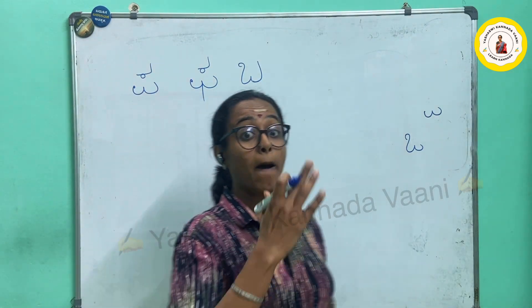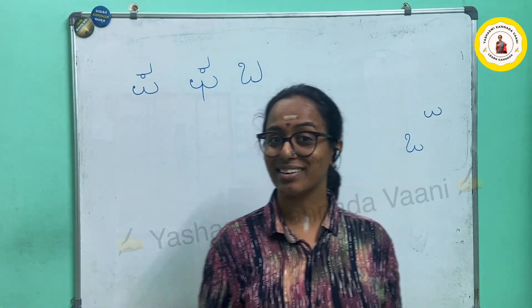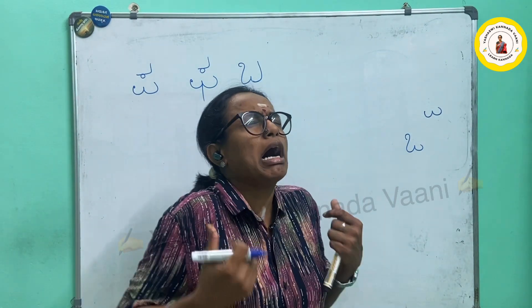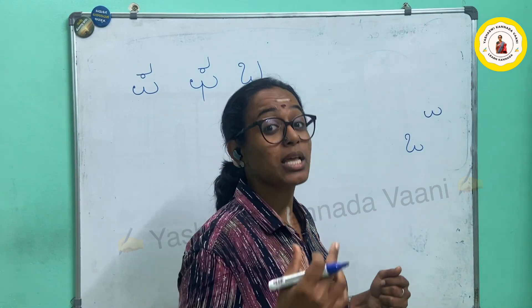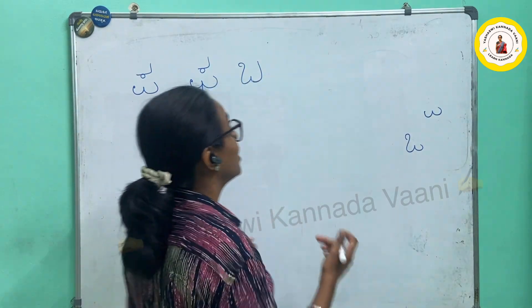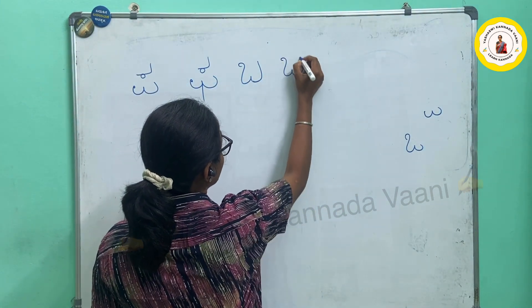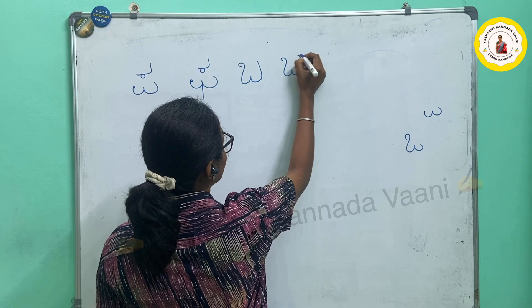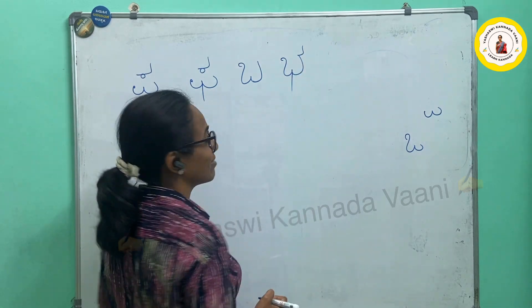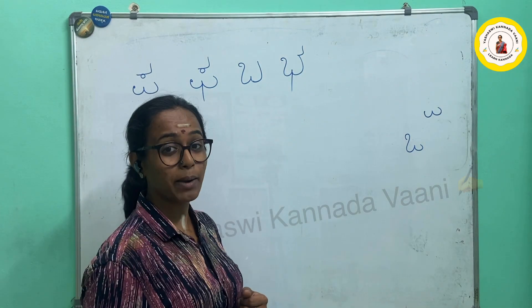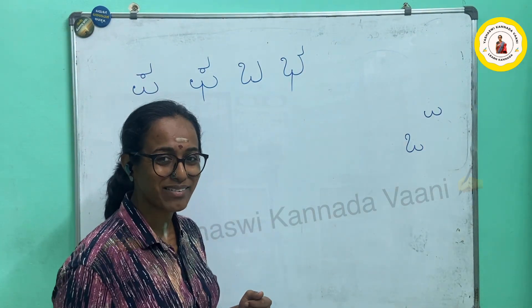The next one is BHA. BHAARATA — BHAARA means heavy. So that is BHA. How do I write? Write as it is — that is letter BHA. Very simple.